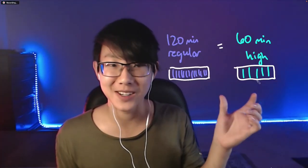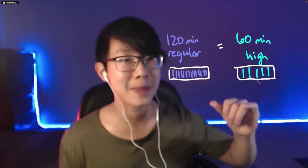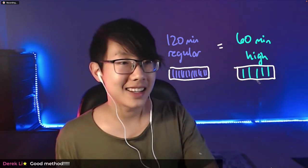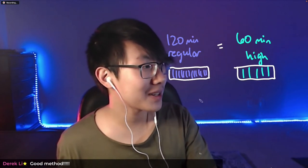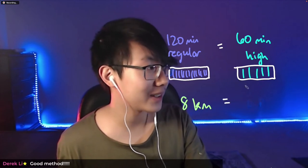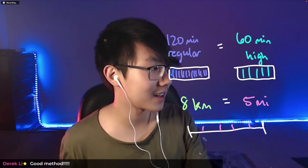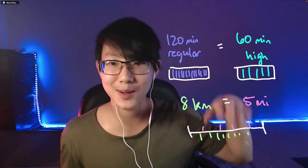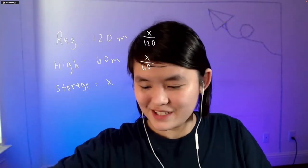As a visual representation: if storage is constant, since you get more minutes on regular, each minute takes less space than high. This is kind of like distance — a common conversion is 8 kilometers equals 5 miles. It might be tempting to say kilometers are longer because 8 is bigger than 5. But if they're the same distance, 5 miles means each mile takes up more space. So a mile is actually longer than a kilometer. That's a parallel between the two situations.